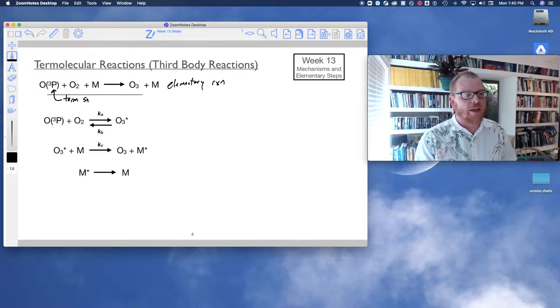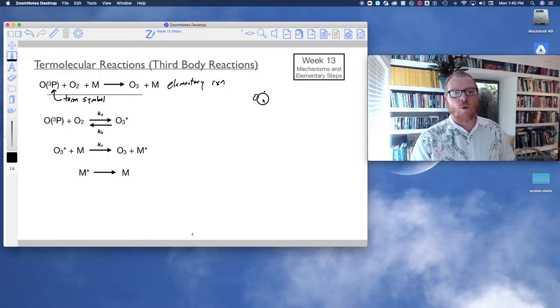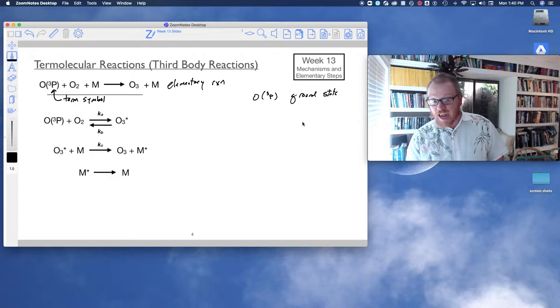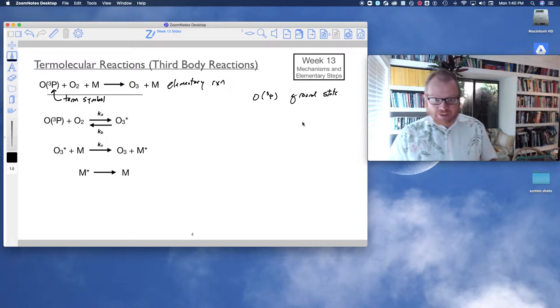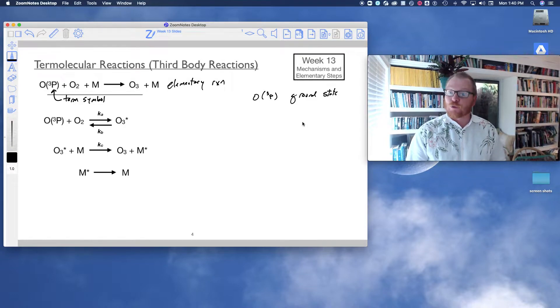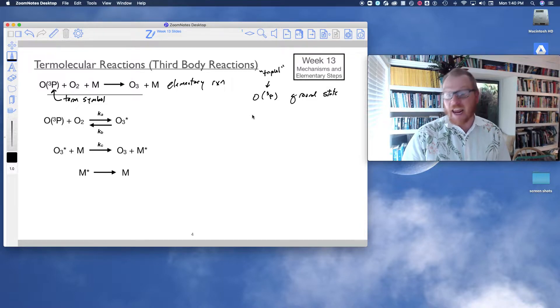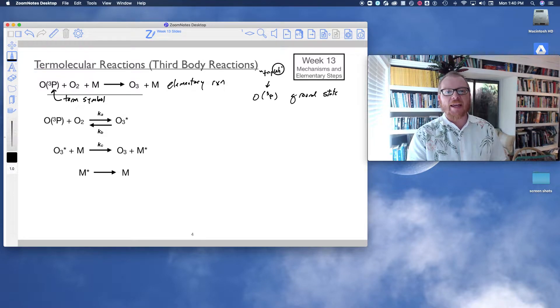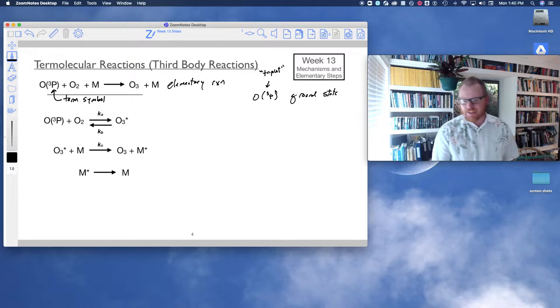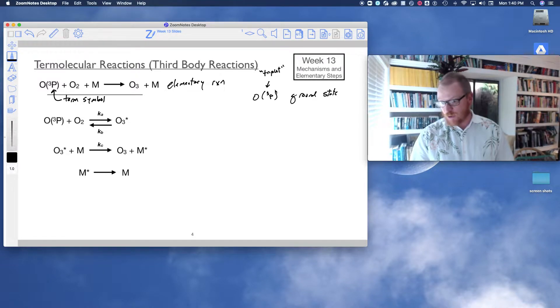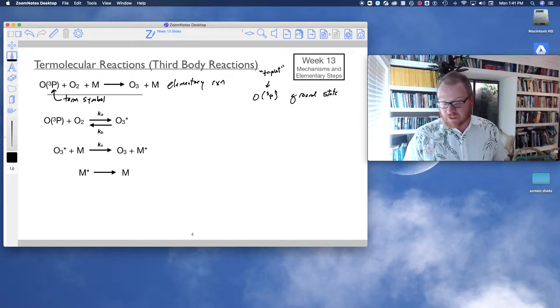The first thing that I want to talk about is this triplet P thing here. That's called a term symbol. As it turns out, O triplet P is a ground state oxygen atom. We're going to talk about this in a lot more detail in Chem 362. This three right here is called a triplet state. There's three main common occurring electron spin states that we encounter: the triplet, the doublet, and the singlet.